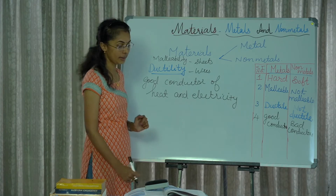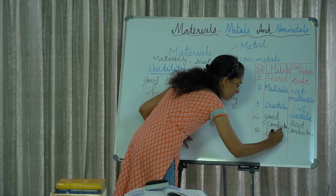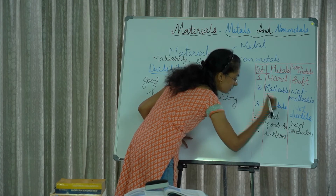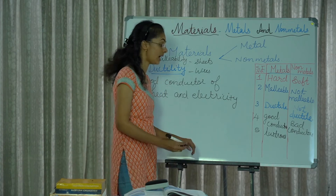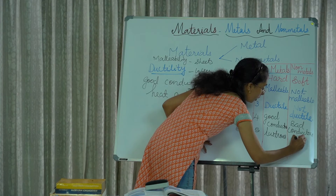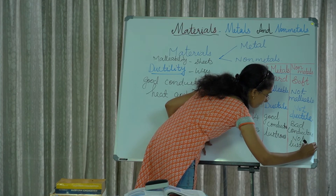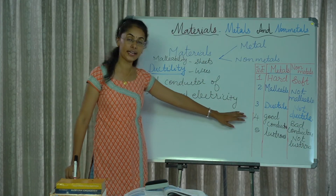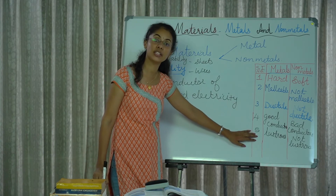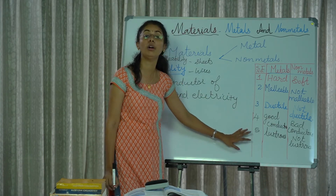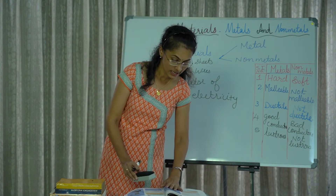The next property — the fifth property — is that metals are lustrous. Metals are lustrous, and non-metals are not lustrous.